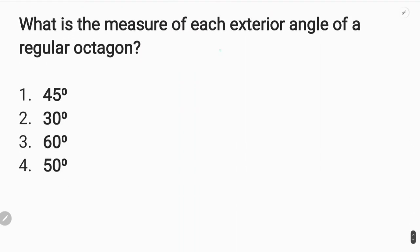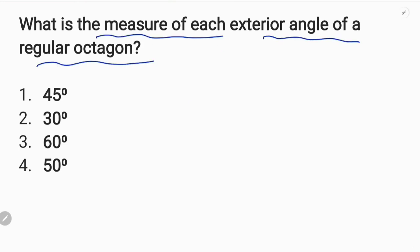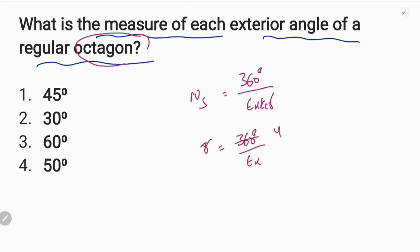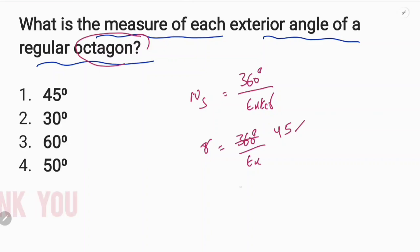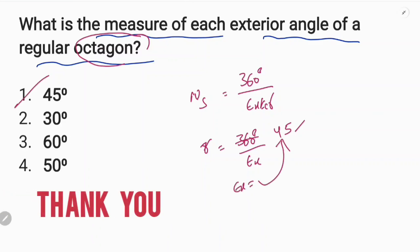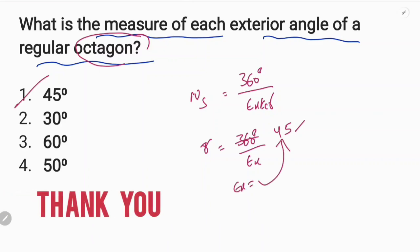What is the measure of each exterior angle of a regular octagon? This is the formula. Number of sides is equal to 360 degrees by exterior angle. Octagon has 8 sides. 8 is equal to 360 degrees by exterior angle. The exterior angle is 45 degrees. First option. I am going to start. You can start. If I have written real and done.